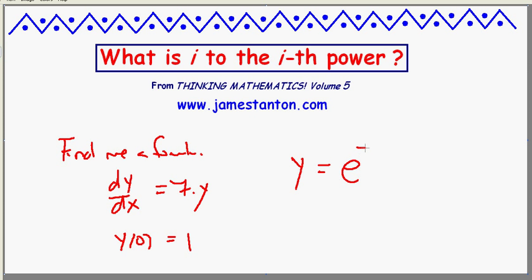In fact, we see that y equals e to the 7x does the trick. Differentiate e to the 7x, I'll get e to the 7x times 7. Yep, that first part is done. And put in x equals 0, y equals e to the 0 would be giving me y equals 1. Voila. So that function satisfies that set of differential equation.